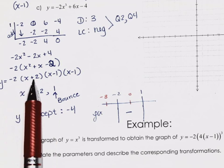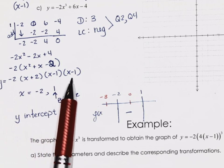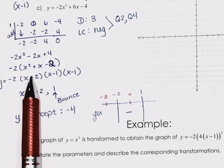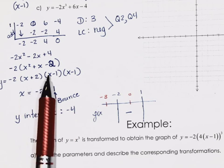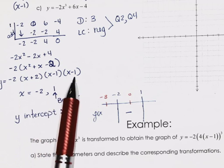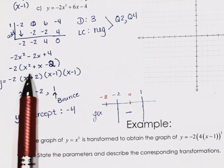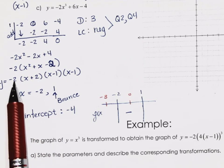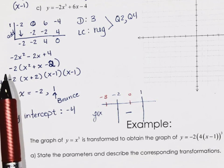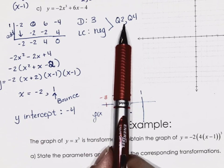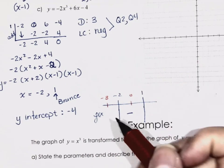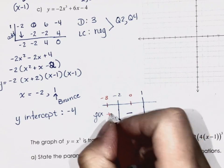Let's try again with the factored form directly. Putting negative 3 in each factor: negative, negative, negative — three negatives. Times the negative out front gives a positive. And if I put 2 in: positive, positive, positive inside, but times that negative out front gives a negative. And we should have anticipated that — ending in quadrant 4.